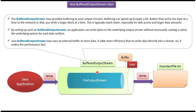For example, Buffered Output Stream can provide buffering to a File Output Stream. It can write a larger block at a time instead of writing one byte at a time, so write operations are faster. Buffered Output Stream uses an internal buffer to store data, adding more efficiency than writing data directly into a stream, making performance fast.